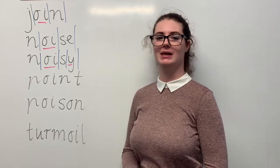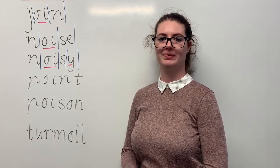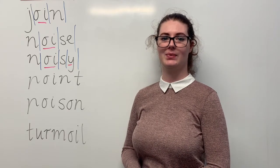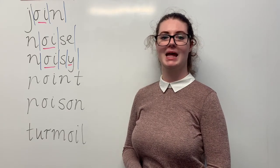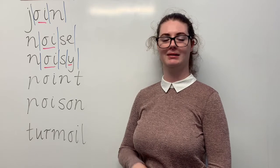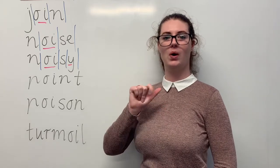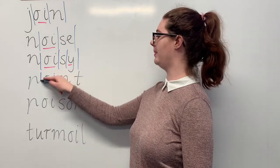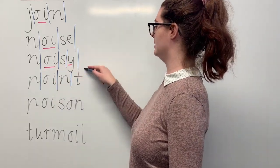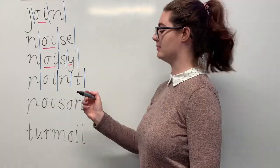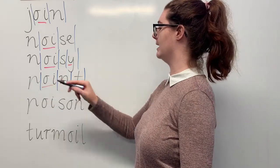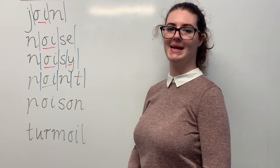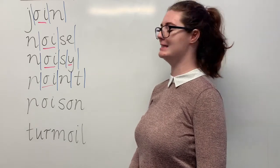Our next word is point. Say point. The little boy was obsessed with cars and whenever he would see one, he would point to it. The sounds in point are, together, p, oi, n, t. The letters in point are p, oi, n, t. The part we need to remember is the oi digraph making the oi sound. Can you teach it to me? Point: p, oi, n, t.